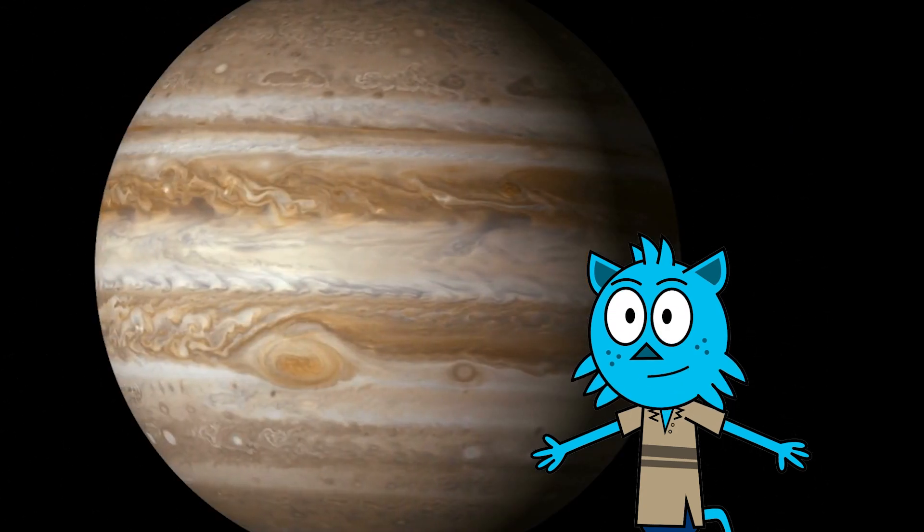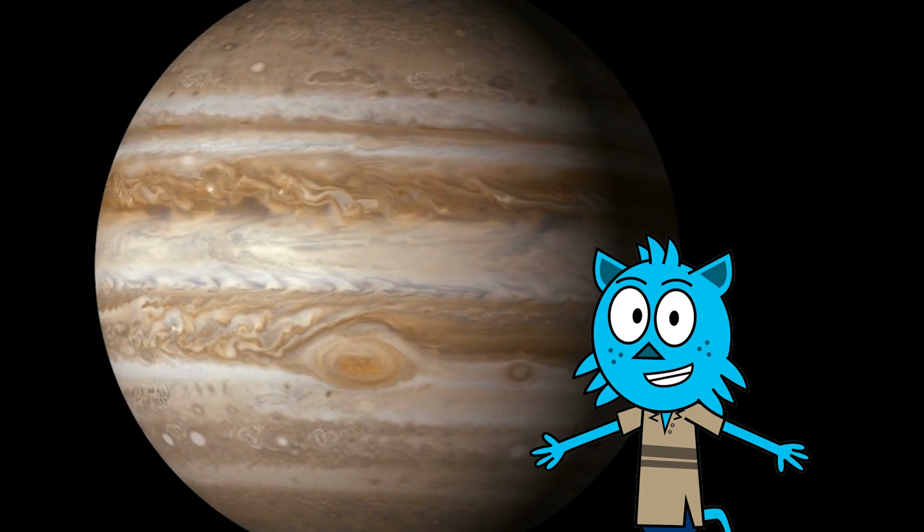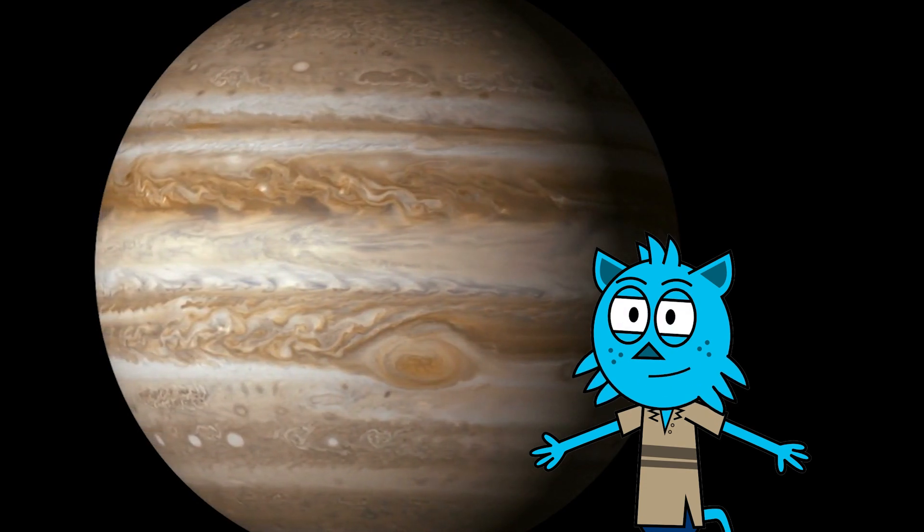Say hello to Jupiter, the biggest planet in our solar system. It's like a giant ball of colorful clouds. Jupiter's famous for the Great Red Spot, a giant storm that's been raging for hundreds of years.